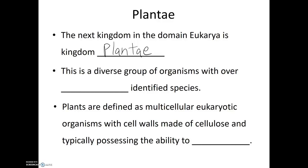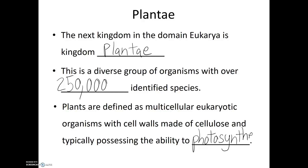This is a diverse group of organisms with over 250,000 identified species — that's a quarter of a million different identified plant species. Plants are defined as multicellular eukaryotic organisms with cell walls made out of cellulose and typically possessing the ability to photosynthesize. People are often surprised to hear that algae are not considered to be part of the plant kingdom, but it comes back to this definition about having cell walls made of cellulose. Algae does not have that, seaweed does not have that, and so for that reason, seaweed is considered to be a protist and not a plant, even though it is multicellular, eukaryotic, and does photosynthesize.